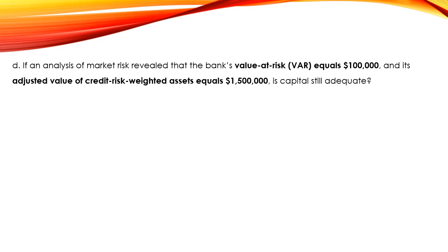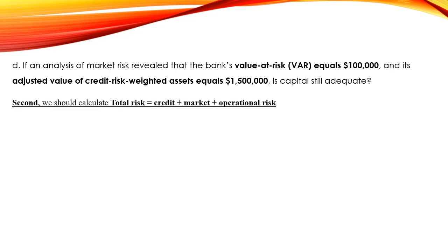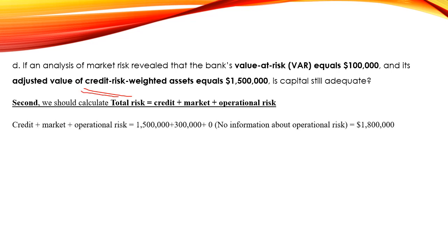The second step is to determine the total risk. Since credit risk is already given, total risk equals credit risk plus market risk plus operational risk. So: $1,500,000 (credit risk) + $300,000 (market risk) + $0 (no operational risk data) = $1,800,000. This is the total risk.